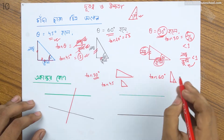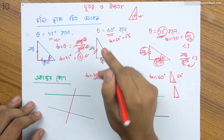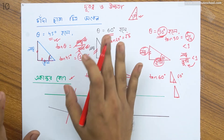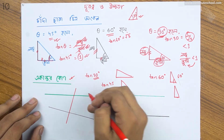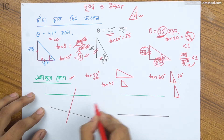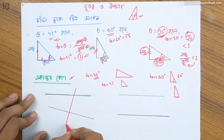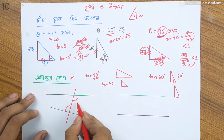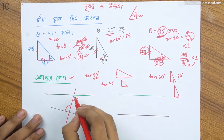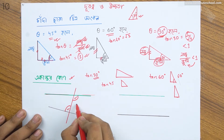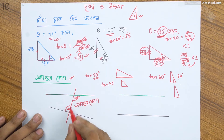যদি একটি কোণ 60 ডিগ্রি মাপের হয়, তাহলে তোমরা বলবে যে একান্তর কোণ মানেই সমান। আসলে একান্তর কোণ সমান কেন — একান্তর কোণ বলতে কী বোঝায়? দেখো, দুইটা রেখা যখন একটি রেখা ছেদ করে, তখন একটি একান্তর কোণ তৈরি হয় এবং আরেকটি একান্তর কোণ তৈরি হয়। এই দুইটি রেখার বিপরীত পাশে যে কোণ, সেটি কি সমান?